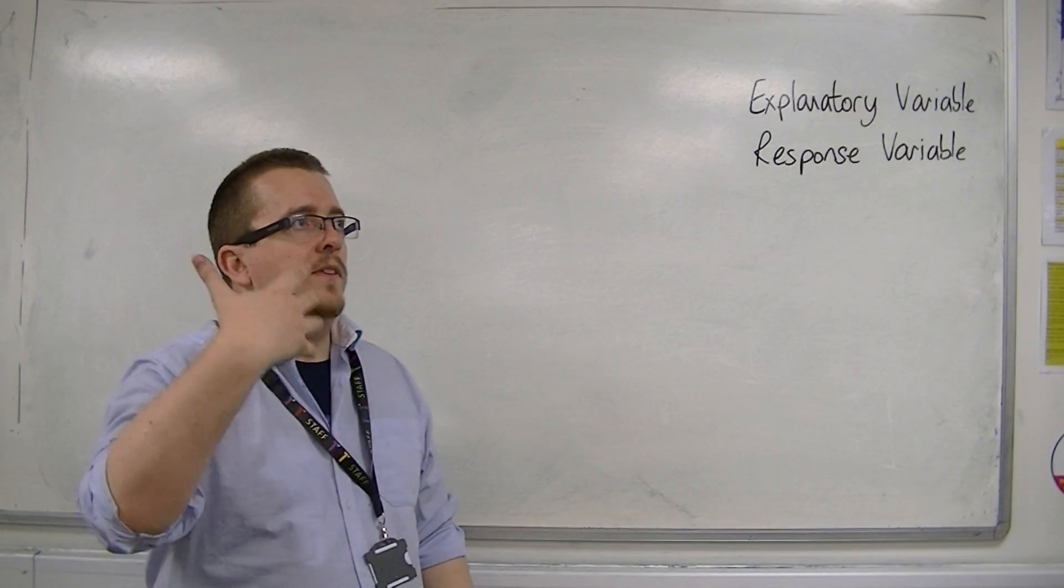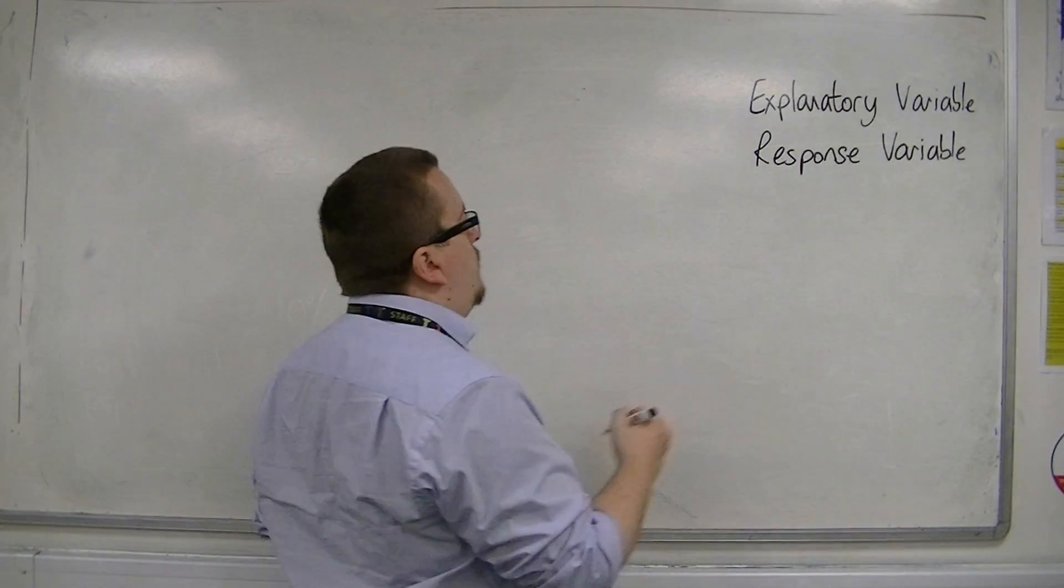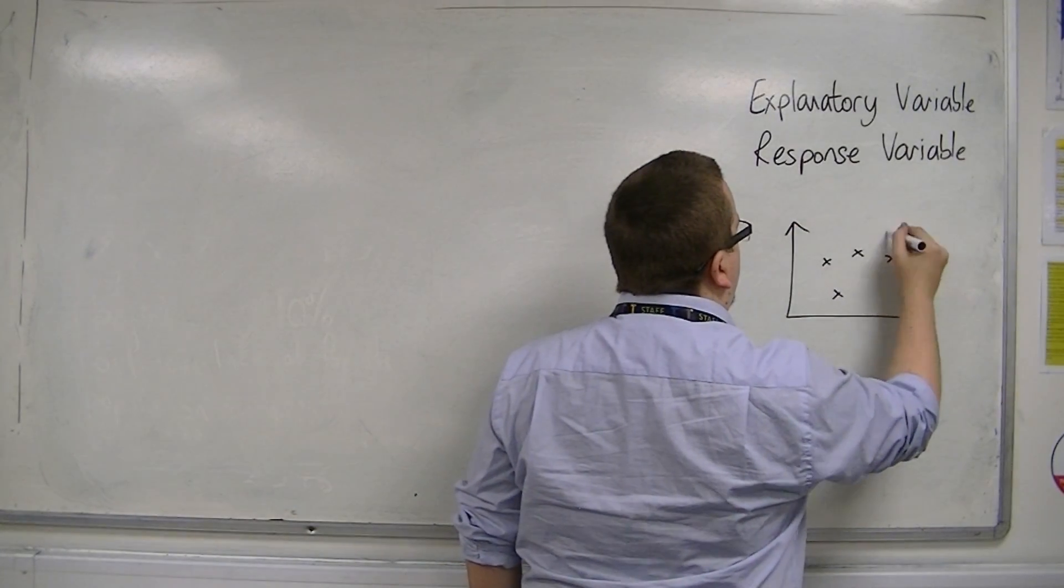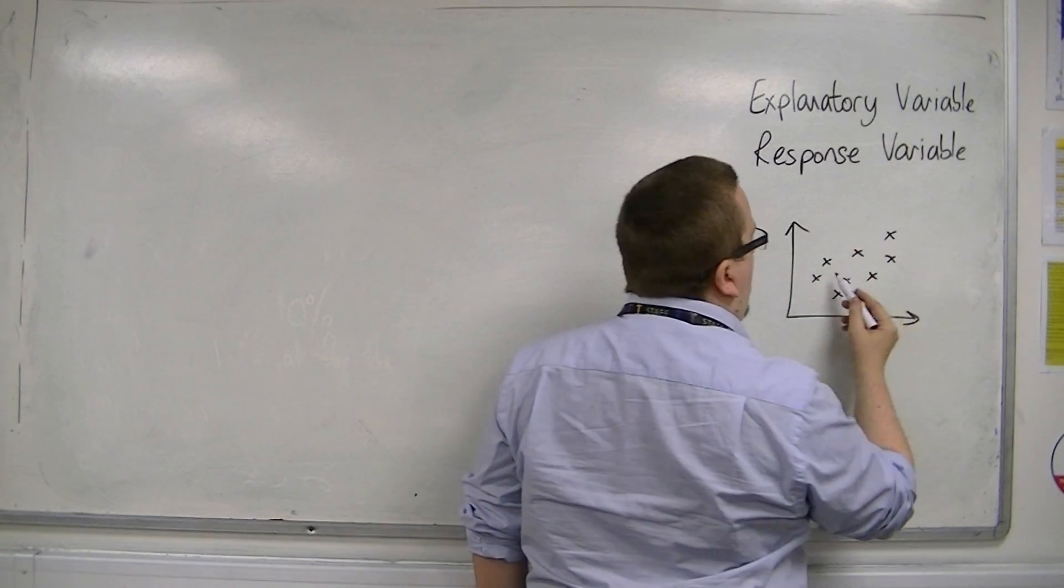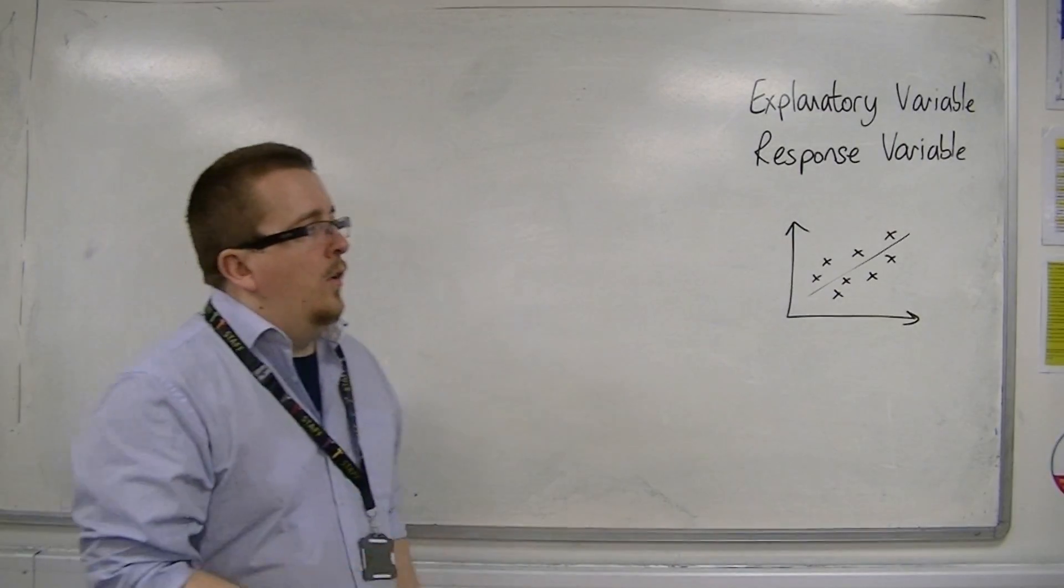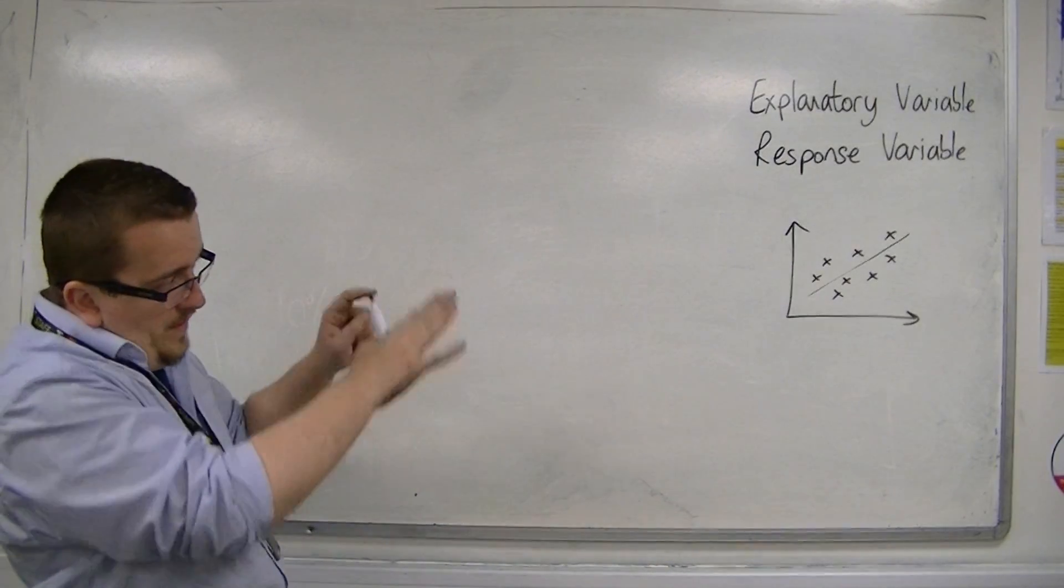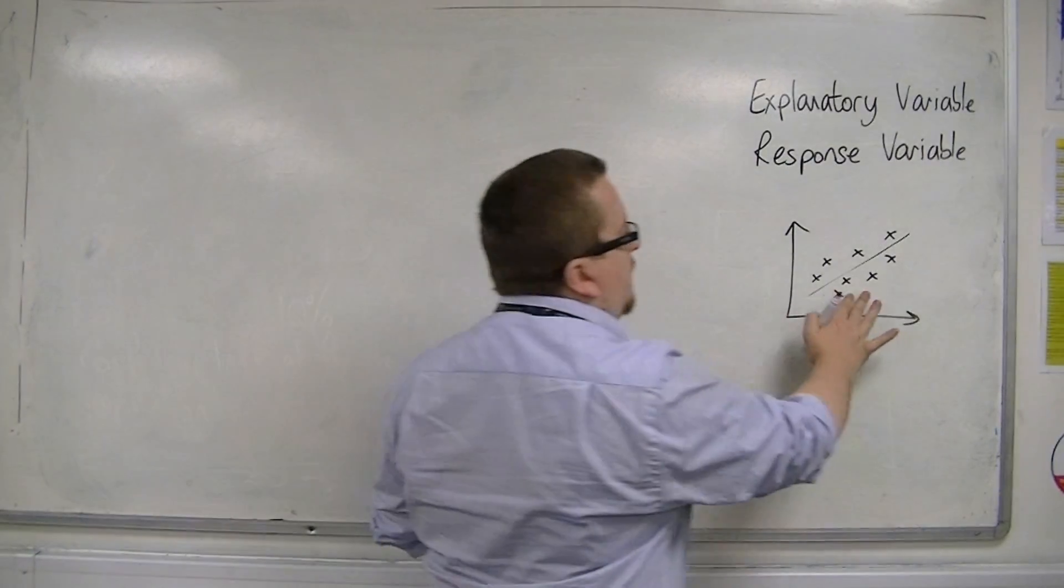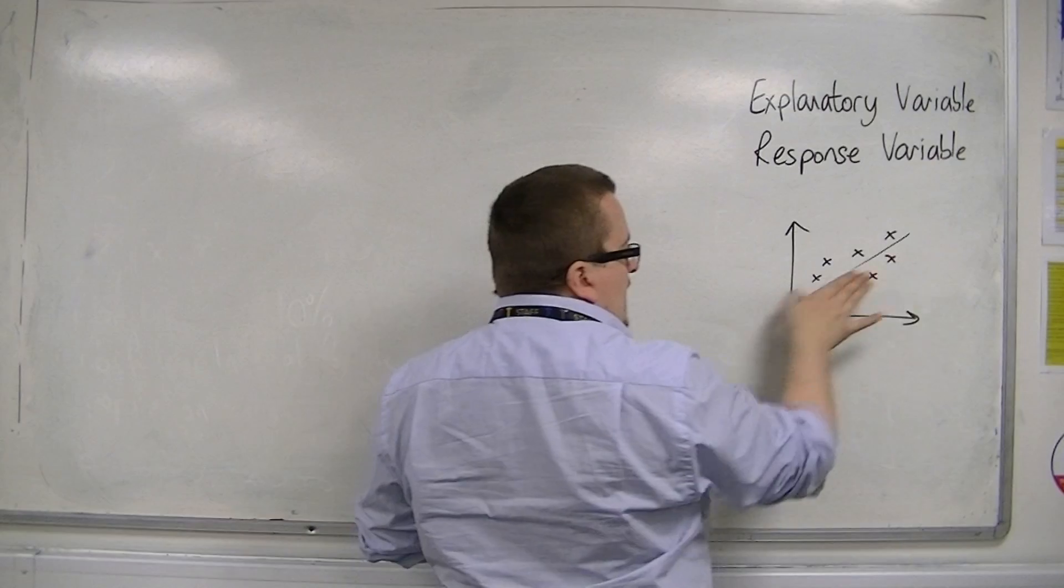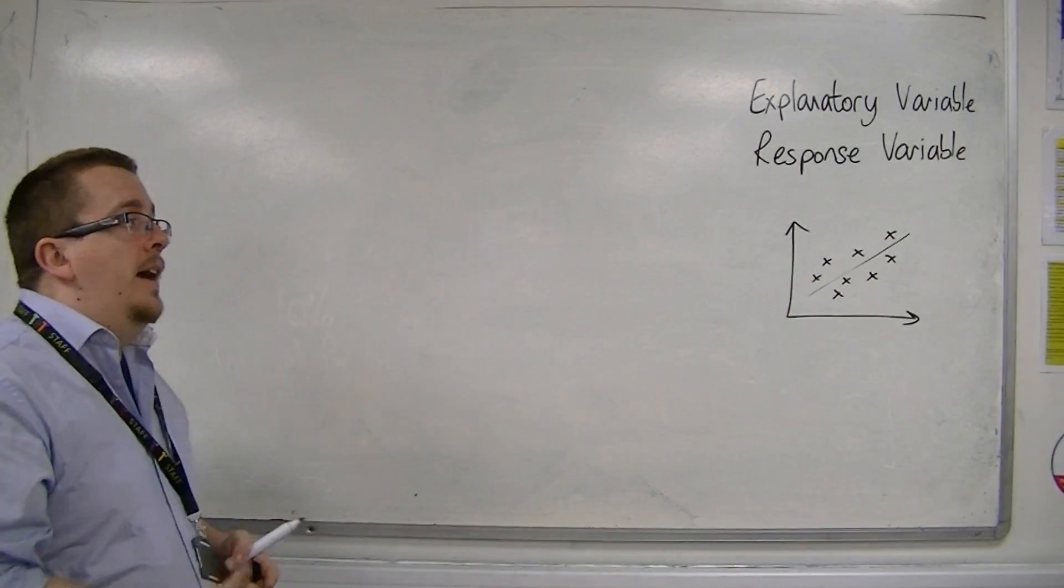Now scattergraphs are things that you will have met at GCSE level. And in scattergraphs, what you usually ended up doing was when you'd plotted the data, you usually ended up trying to draw a line of best fit. And any time that you did this, you did it by eye. You were doing it just trying to figure out, I've got about half the data this side, half the data that side. The data's going up in that kind of direction, so that's where I'm going to draw my line of best fit. And that's what you would do at GCSE level.